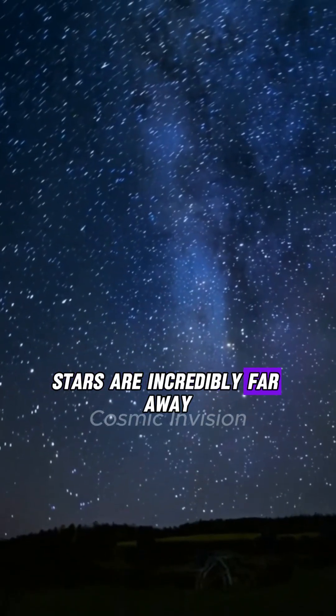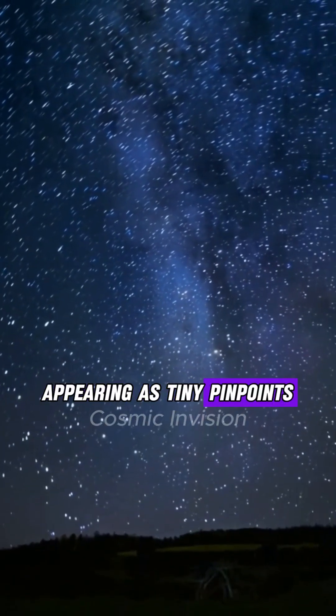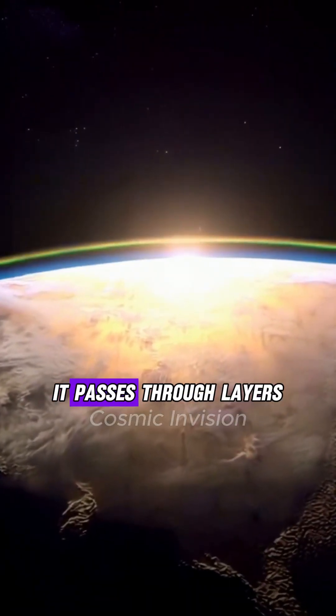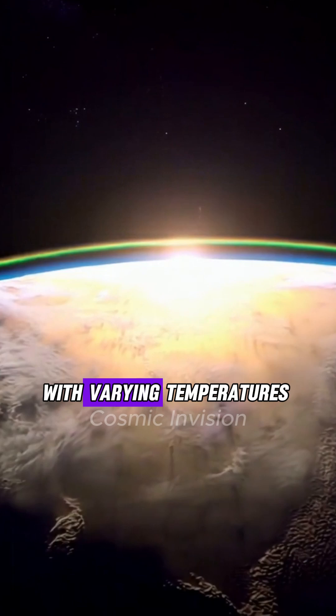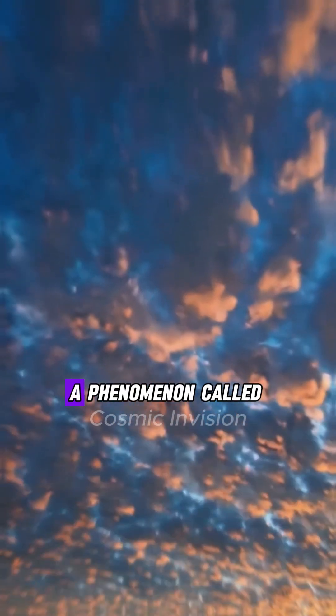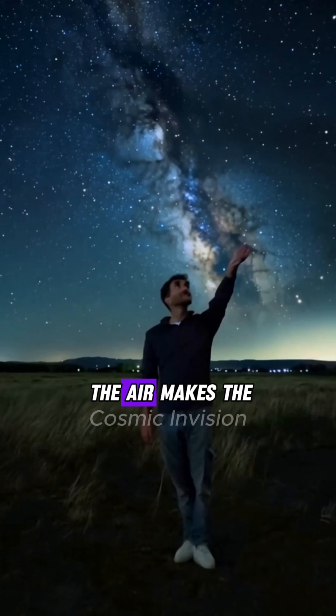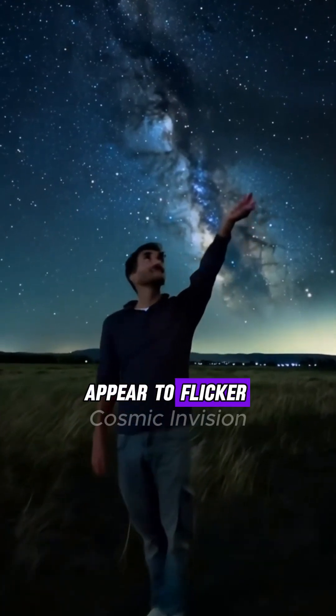Stars are incredibly far away, appearing as tiny pinpoints of light in the sky. As their light travels through Earth's atmosphere, it passes through layers of air with varying temperatures and densities. This causes the light to bend or refract in different directions, a phenomenon called atmospheric turbulence. The constant shifting of the air makes the star's light appear to flicker and twinkle.